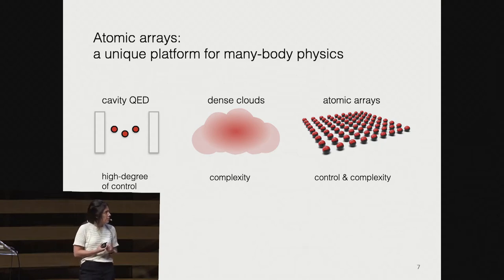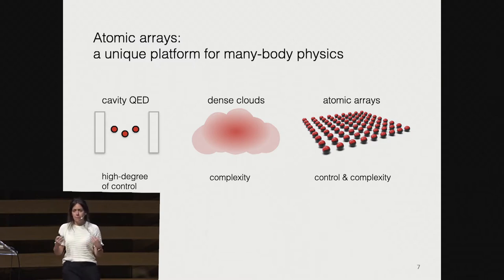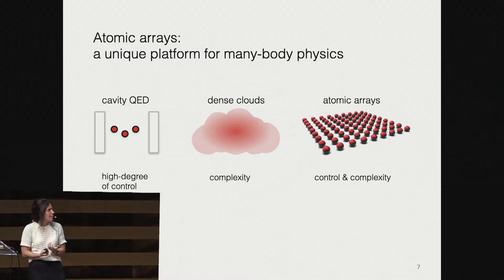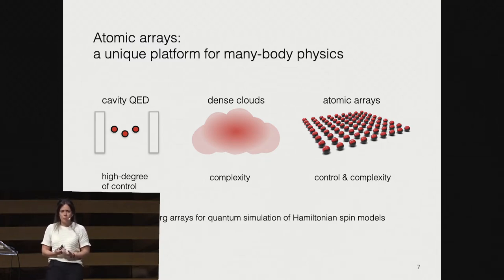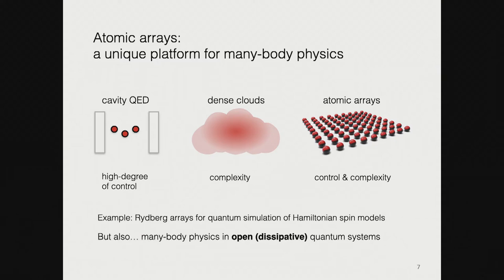Atomic arrays get the best of both worlds. The order in the system — the fact that it is crystal-like — gives rise to control. We can also control each atom individually. On top of that, we have many atoms and therefore potentially many excitations talking with many optical modes, giving us the complexity. And of course, in the last few years there are many examples in the literature where Rydberg arrays have been suggested as amazing platforms for quantum simulation of Hamiltonian spin models. But today I'm talking about many-body physics in open and dissipative quantum systems, not purely Hamiltonian or closed systems.